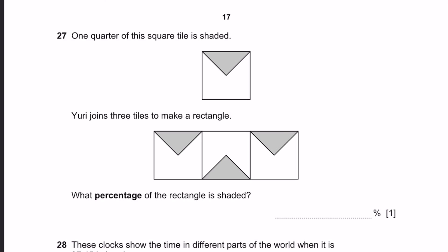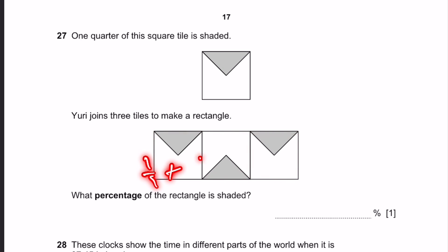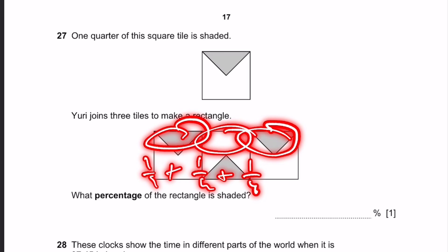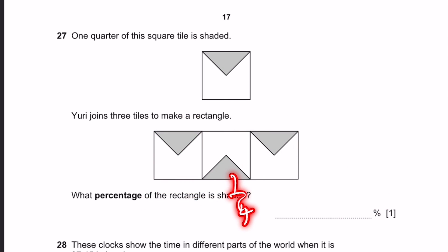Question 27. One quarter of this single tile is shaded. If you join three tiles to make a rectangle, what percentage is shaded? Each tile has one quarter shaded, so three tiles have one quarter plus one quarter plus one quarter. But this is over three separate squares, so we divide by 3. That gives (3/4) divided by 3, which is still one quarter. So the percentage of the rectangle that is shaded is 25%.